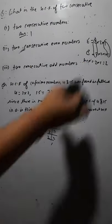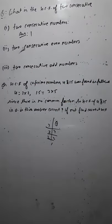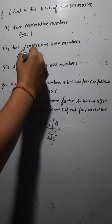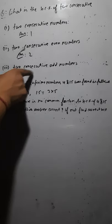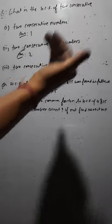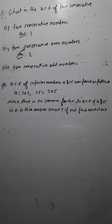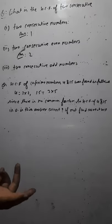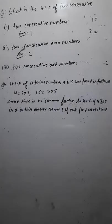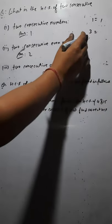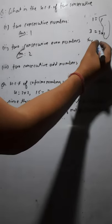HCF of two consecutive even numbers is two. Now the next question: HCF of two consecutive odd numbers. The first odd number is one, and after one, the next odd number is three. Prime factorization of one is only one. Prime factorization of three is three × one. What is the common factor? Only one is the common factor. So HCF is one.